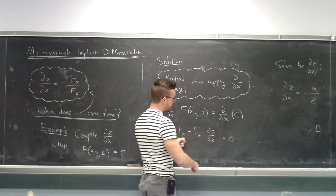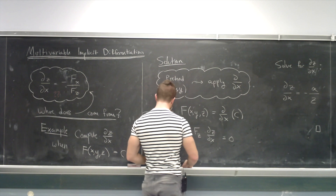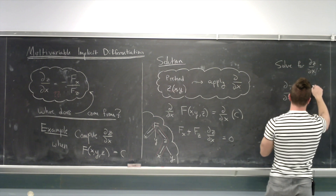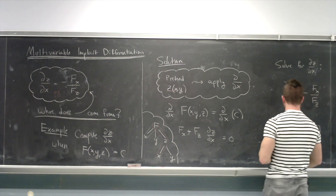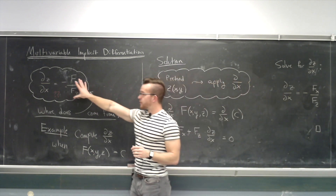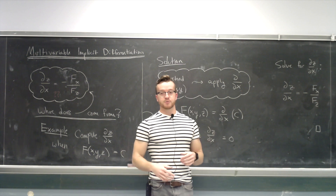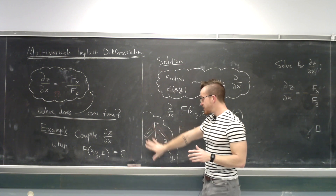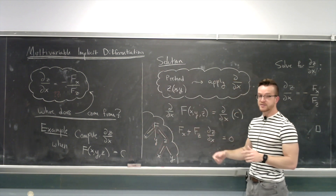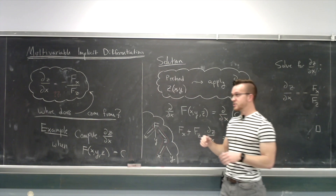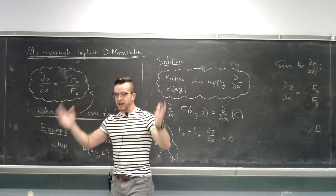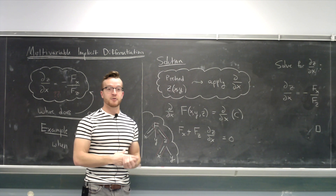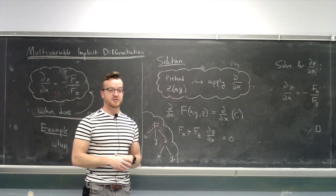We want to solve for ∂z/∂x algebraically. Move capital F sub x over and divide by capital F sub z, giving ∂z/∂x equals negative F sub x over F sub z. So when you see a formula like this, you shouldn't treat it as something new to memorize or a new concept. It's really just the multivariable chain rule applied in exactly this way — same as implicit differentiation in single variable calculus. Calling it a new name with new formulas and new terms is, in a sense, just there to scare you. It's nothing new.